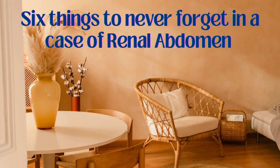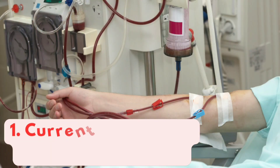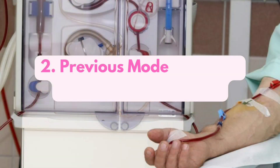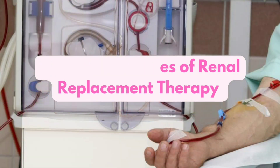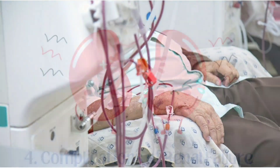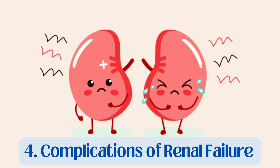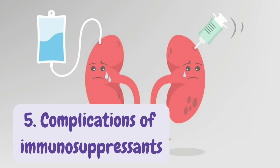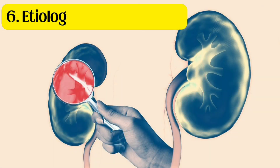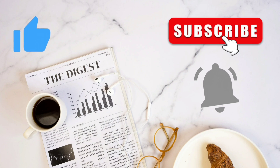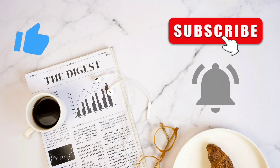Six things you should never forget in a case of renal abdomen: number one, the current mode of renal replacement therapy — whether it is transplant or dialysis; number two, previous modes of renal replacement therapy; number three, adequacy of renal replacement therapy in the form of uremia and fluid status; number four, complications of renal failure such as anemia; number five, complications of immunosuppressants; and number six, the etiology of renal disease.